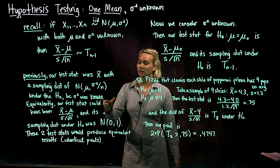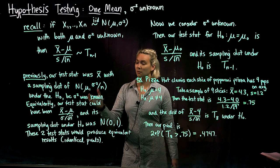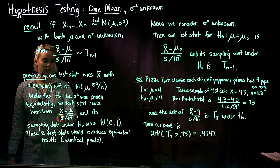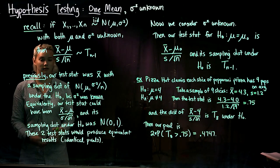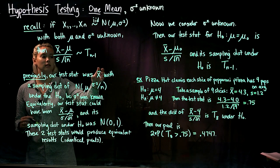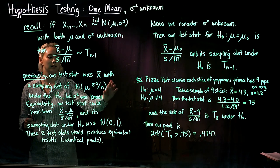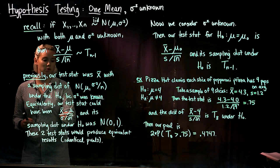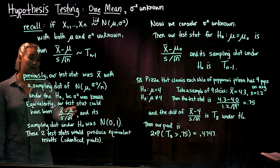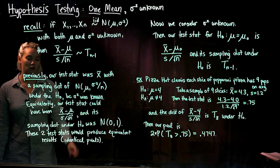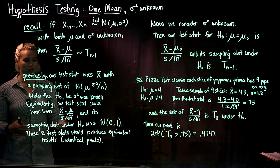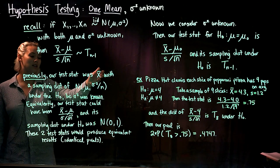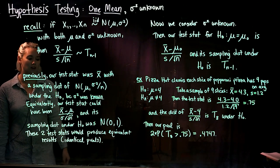This is the same thing as having a test statistic of x bar minus mu under the null, divided by sigma over root n. In other words, we could have had a test statistic of x bar with that sampling distribution, or we could have had a test statistic of x bar minus mu over sigma over root n, whose sampling distribution would have been a standard normal. Either way, we would get identical p-values.